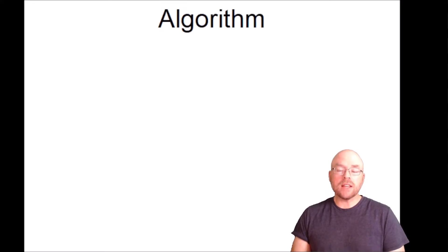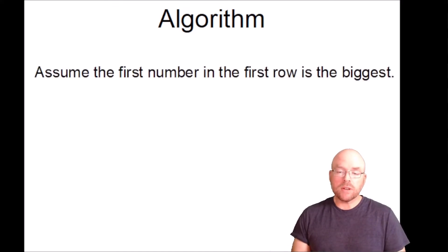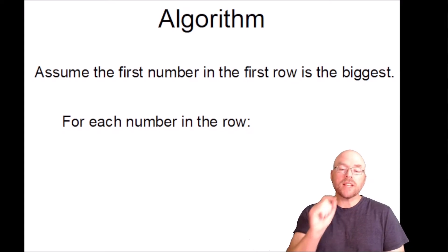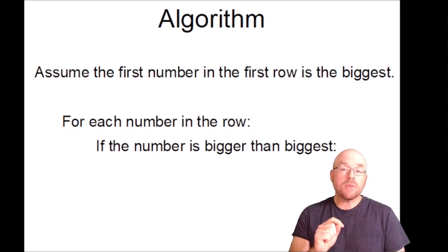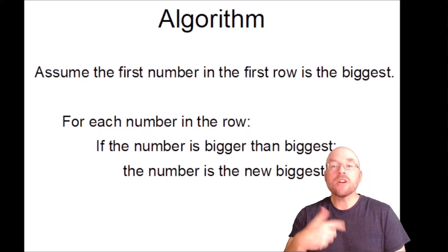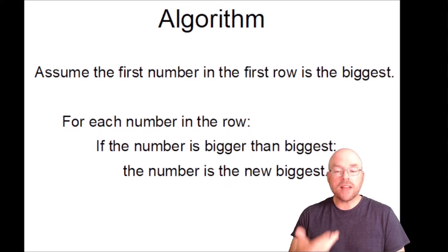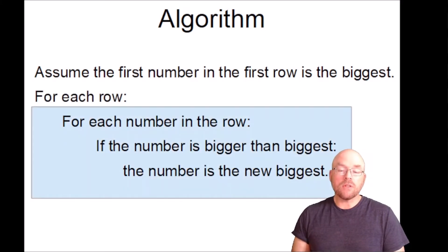Let's put that in terms of an algorithm. What did we do first? We started off by assuming that the first number in the first row is the biggest. We had to start somewhere. Then what did we do? We looked at each number in the first row. If that number was bigger than biggest, that number became our new biggest. We replaced what was in biggest with that number. And then we just repeated that for every single row. That's it. That's all there is to it.